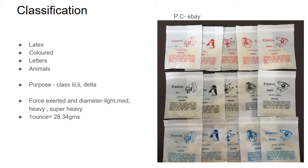A fourth classification is based on the use of the elastic — for example, if the elastic is used for correction of class 2 or class 3 malocclusion, it is classified as a class 2 or class 3 elastic. The most common and useful classification, however, is based on their diameter and the force they produce. Based on force produced, elastics can be classified as light, medium, heavy, and super heavy. The thickness of a given diameter elastic increases the force it produces.